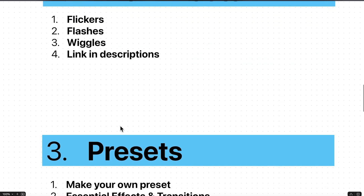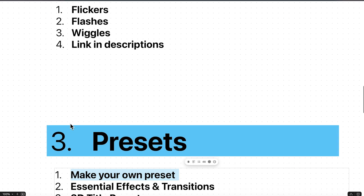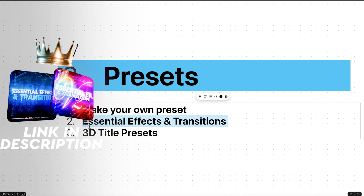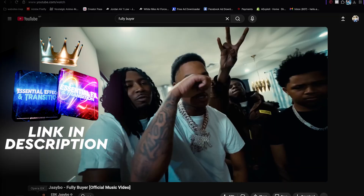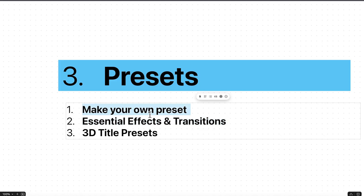The third point is presets. Presets save a lot of time. You can make your own presets based on your own style. But if you're new to After Effects and don't know how to edit yet, you can use a pack called Essential Effects and Transition — it comes with 80-plus presets for your music video. That's what I used on the Fully Buyer project: all of these shakes and wiggles are from that pack. Every pro editor on Instagram either has their own presets or uses packs like Essential Effects to speed up their workflow.